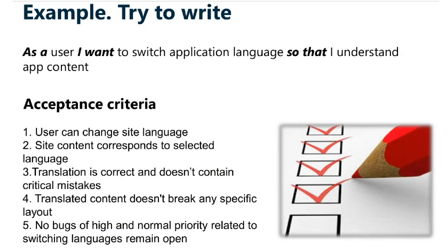Here is an example. As a user, I want to switch the application language so that I understand the app content. The acceptance criteria for this requirement would be: the user can change the site language; the site content corresponds to the selected language; the translation is correct and doesn't contain critical mistakes; translated content doesn't break any specific layout; and no high or normal priority bugs related to switching the language remain open. These acceptance criteria relate directly to the given user story requirement.